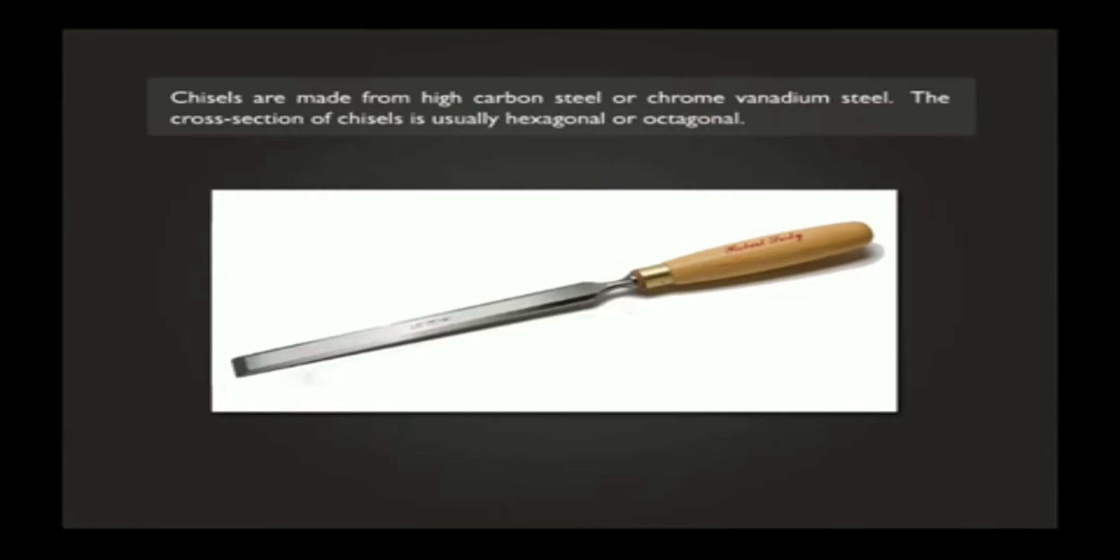The cross section of chisels is usually hexagonal or octagonal. The cutting edge is hardened and tempered. For flat chisels, which are most commonly used, the point angle theta will be 60 degrees.